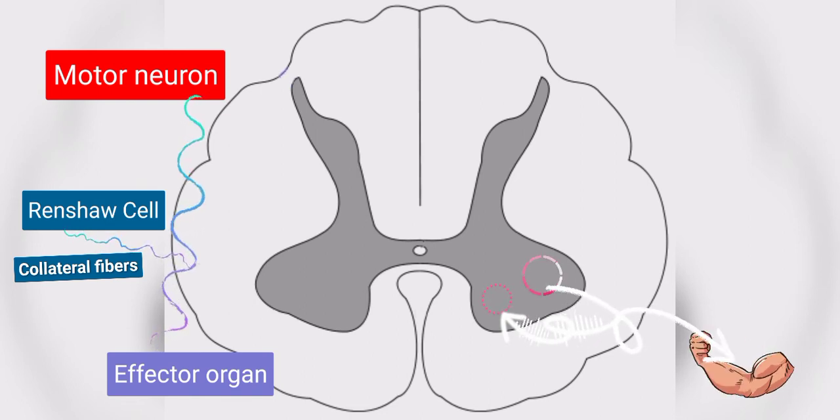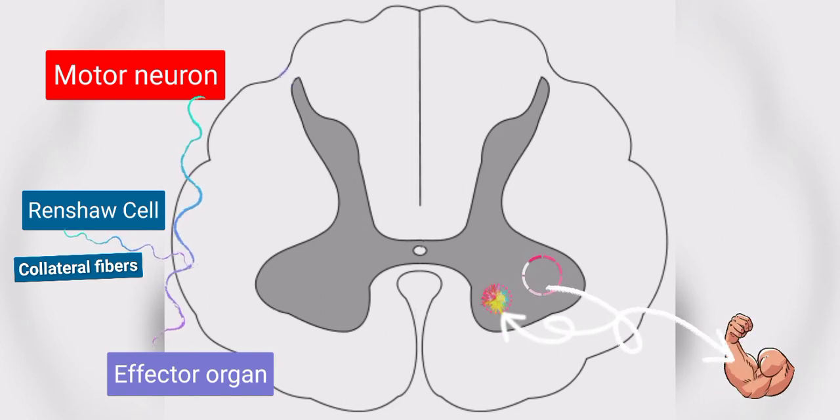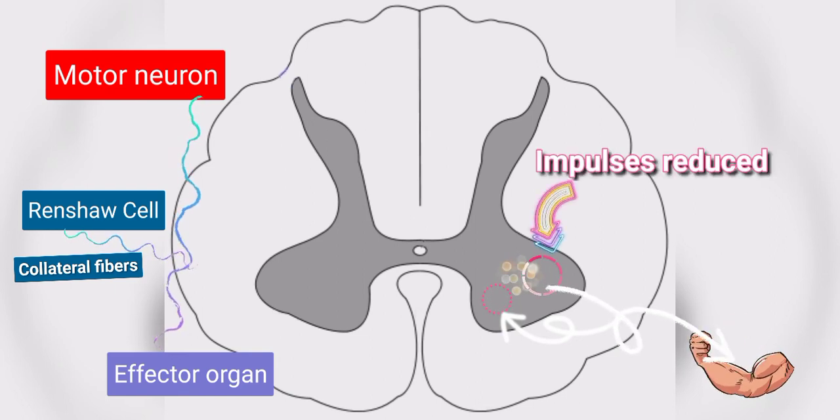Now Renshaw cells get stimulated, and as they are inhibitory cells, they send inhibitory impulses to motor neurons so that impulse discharge from the motor neurons gets reduced and the cells become inhibited.